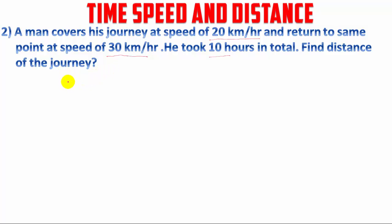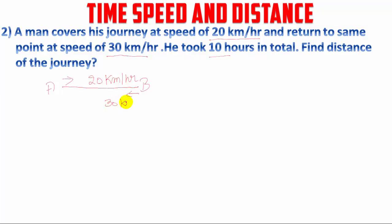In this question, a man covers his journey — he goes from A to B at the speed of 20 km per hour, and returns to the same point A at the speed of 30 km per hour. He took 10 hours in total, so the time taken is 10 hours. We have to find the distance from A to B.